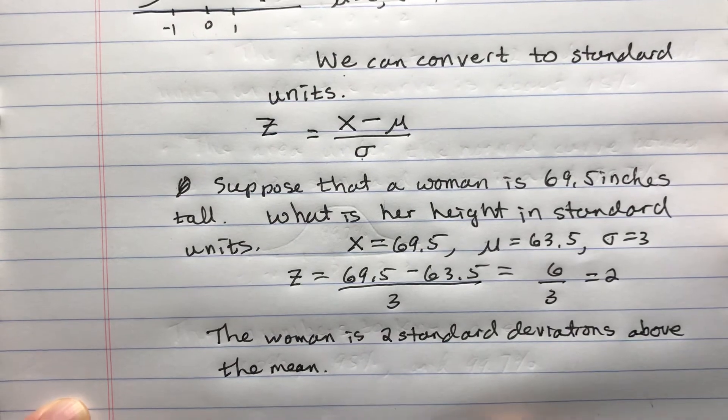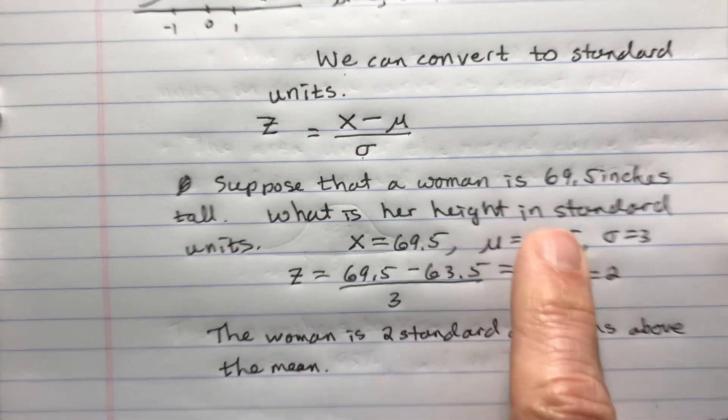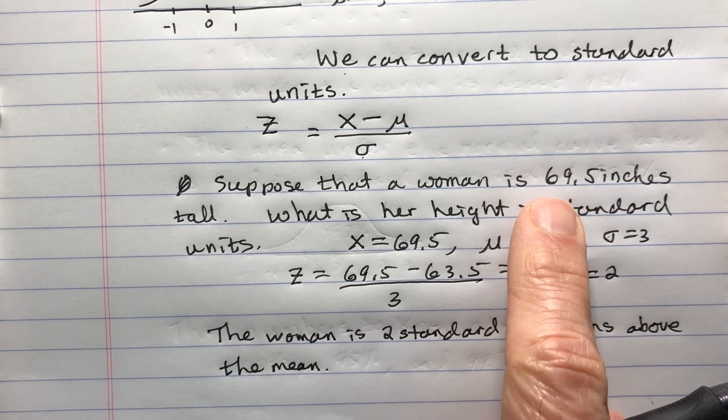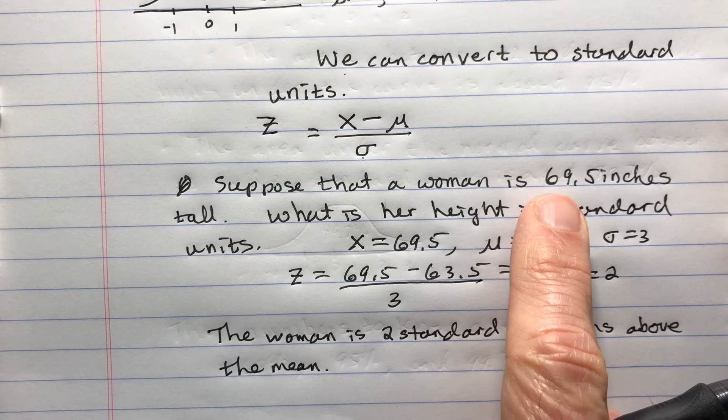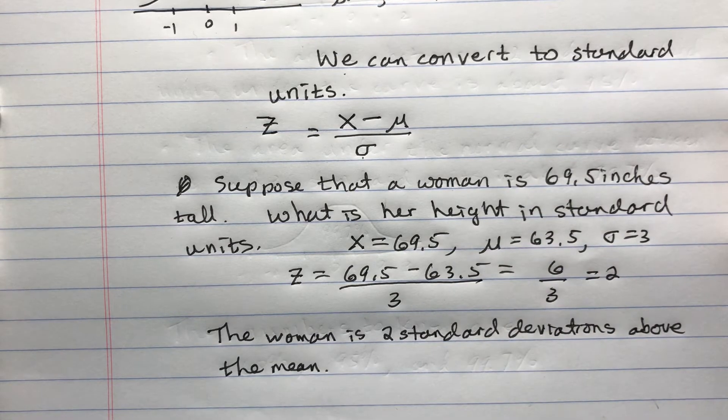For height, I think we just say, okay, 69 inches. Remember, 60 inches is 5 feet. So she's 5 foot 9 and a half, which is on the tall side.